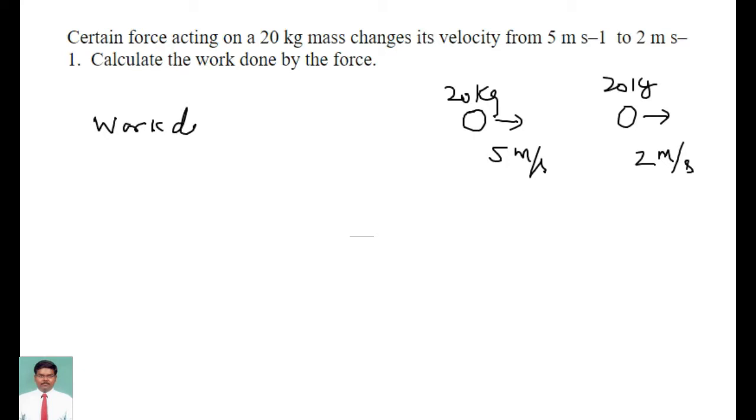So work done will be equal to the final kinetic energy minus the initial kinetic energy. So Kf minus Ki, and we know the formula for kinetic energy is equal to half m into v square.